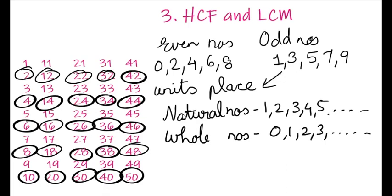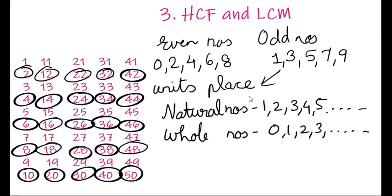And what are whole numbers? The numbers which start from 0, 1, 2, 3, and so on to infinity are called whole numbers. So the circled numbers in this list are even numbers, and the numbers which are not circled are odd numbers.